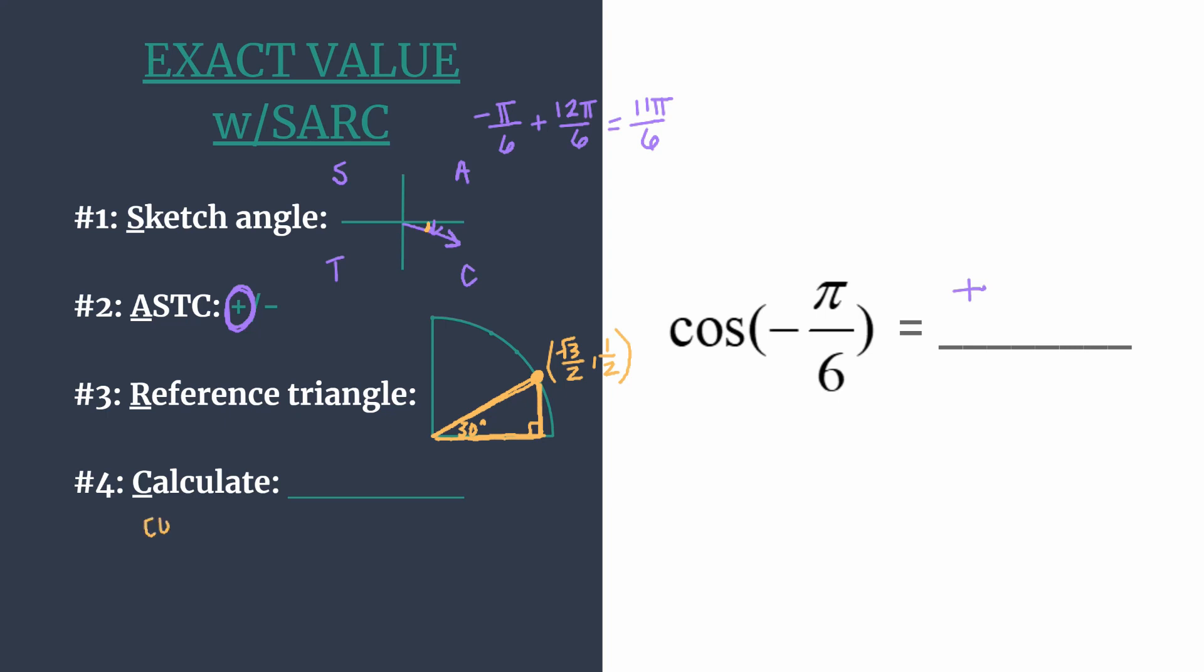So on the unit circle, the cosine of our angle is simply going to be the x-coordinate. So not much calculation needed here. We simply look at our coordinates in the previous step. We see the x-coordinate is square root 3 over 2, and so that's going to be our answer. We've said cosine of negative pi over 6 will be positive square root of 3 over 2.